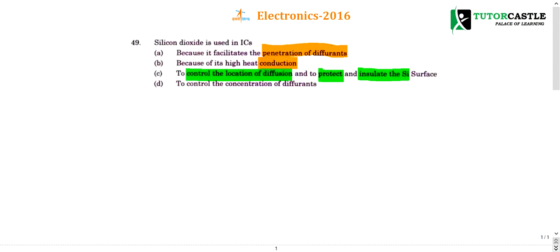Question number 49: silicon dioxide is used in ICs — why? Before we go to this question, you should know a lot of things about IC fabrication. I am not including all those things because time is a crucial parameter here. So just go to the fabrication technique of an IC and how the silicon wafer is involved there. I would like to simply tell the answer.